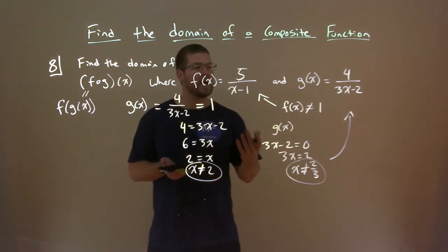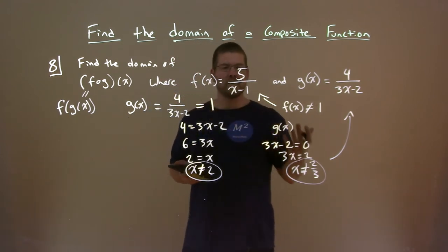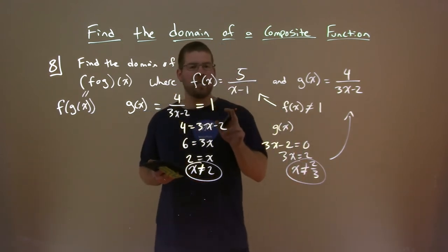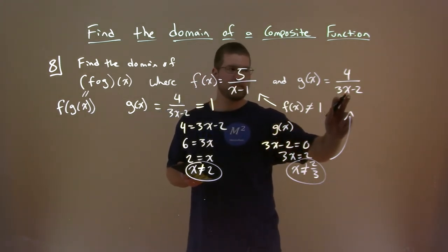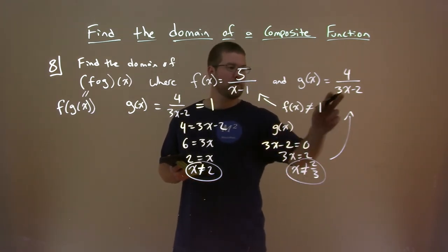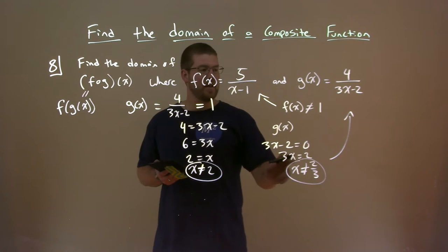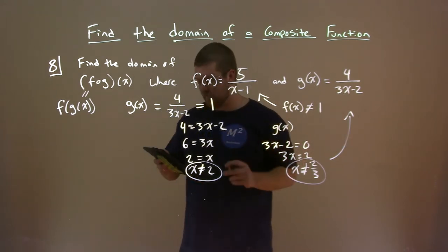Okay, be careful. A lot of people will first look at it and say, oh, this value of f of x can't be 1, so therefore, 1 is not also in our domain. Remember, our first x value gets plugged into g of x here. So 1 is totally fine. It works. The only two values that don't work are 2 thirds for g of x, and then 2 that goes into g of x, which gives an output of 1 for f of x.